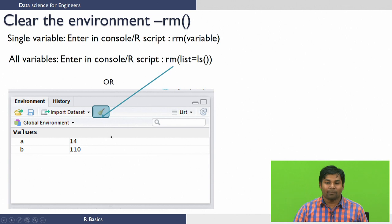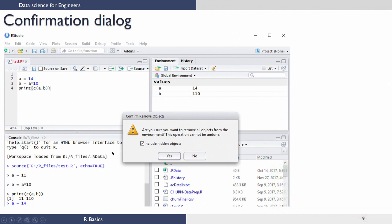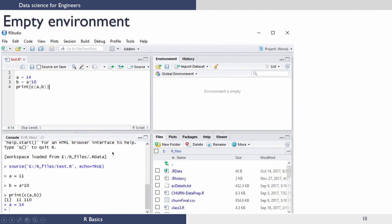In the environment history pane, you see this brush button. When you press this brush button, it will pop up a window saying, 'Do you want to clear all the objects that are available in the environment?' If you say yes, it will clear all the variables which are shown there, and you can see the environment is empty now.